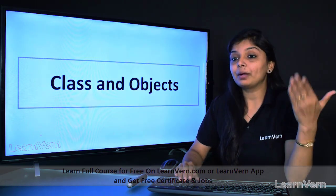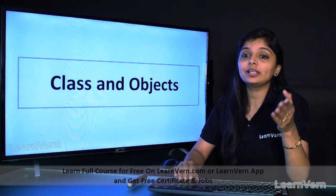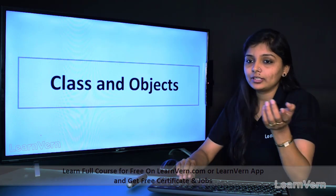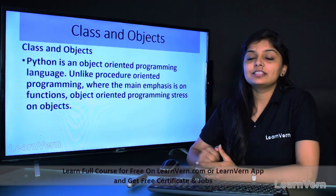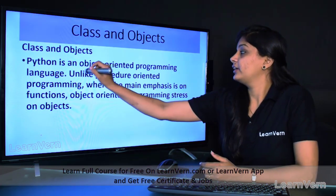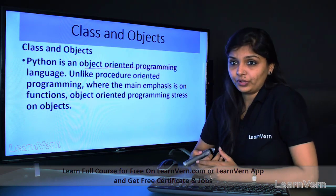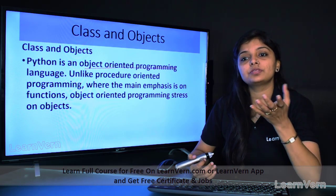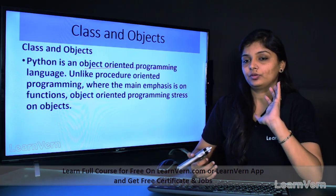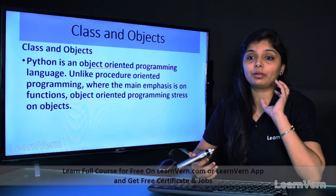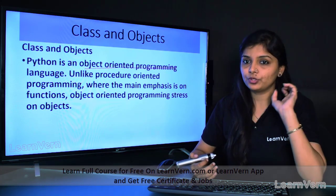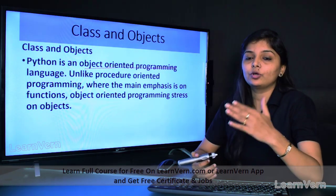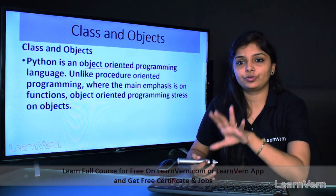In Python object oriented programming, if we use objects, we need to create a class, because the object is only from a class. Python is an object oriented programming. Whatever we have to do, we do with objects — that is object oriented programming. But Python is not a pure object oriented programming, because without objects and without class, we can still do all the work.